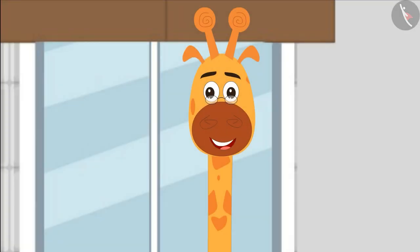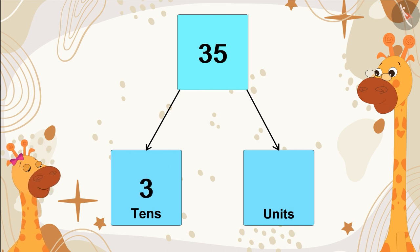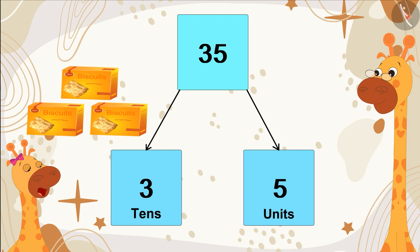Gaffey, now bring me thirty-five biscuits. I have to bring three tens and five units. Means three packets of ten biscuits and five biscuits separately.